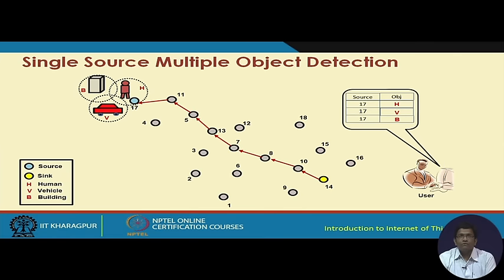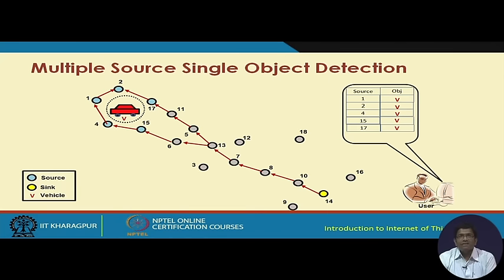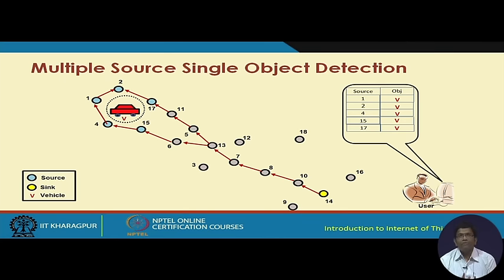By adding just a few objects within the vicinity of a single node, life becomes very complex. Another scenario is multiple sources detecting a single object — here a vehicle — where all the blue-colored nodes act as sources and send information to the sink node. The complexity now is whether all five nodes have seen a single object, a vehicle, or five different objects. It is difficult to discriminate between sense data received from five different nodes.